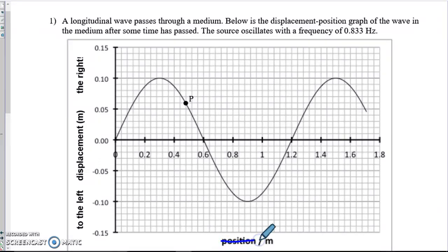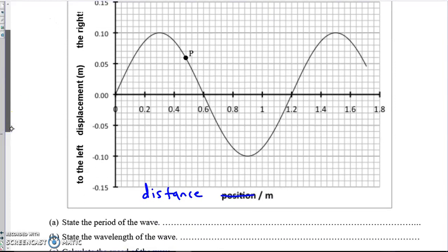The source oscillates with a frequency of 0.833 hertz. Again, you may see this written as position, the more common word IEB is using these days, is distance on the x-axis. And it means the same thing. Where are those particles when they're undisturbed? The first question has us identify the period, and they told us the frequency of the source, so we can easily find the period, because period is 1 over frequency.